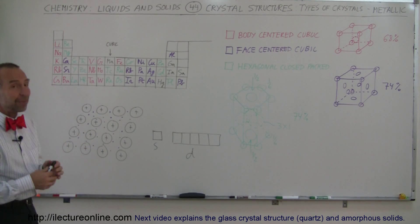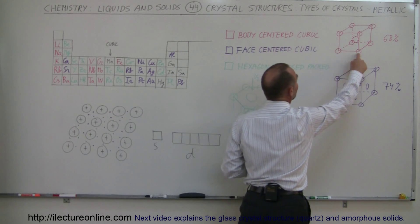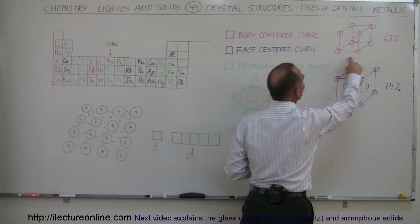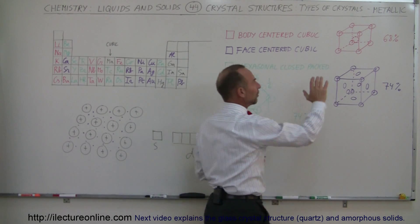The most common three types are the body-centered cubic, which means there's an atom on each of the eight corners of the cube, and there's one at the very center.